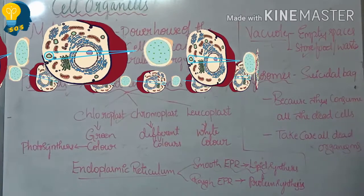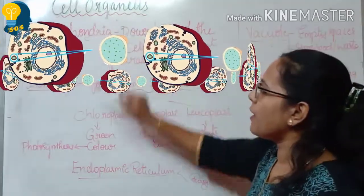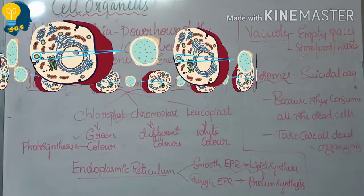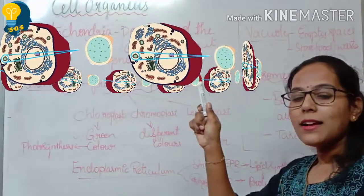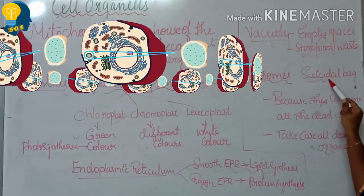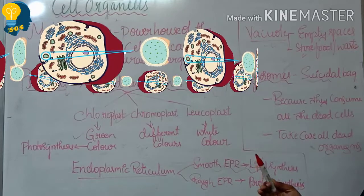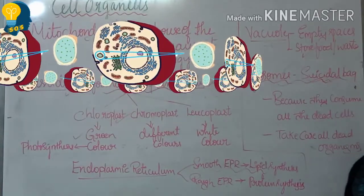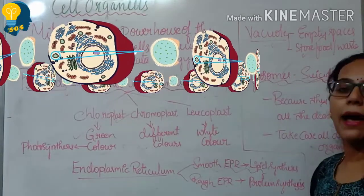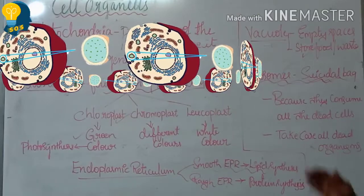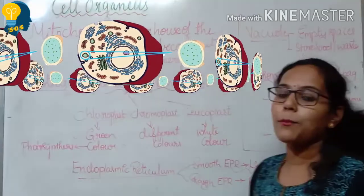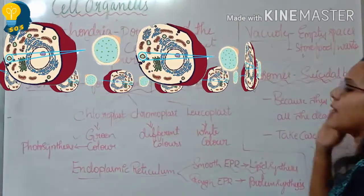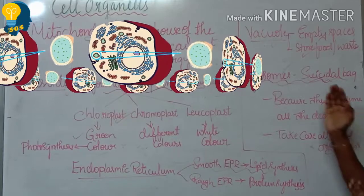Next, let us move towards the lysosome — which will definitely be asked in the exam. Lysosomes are cell organelles called the suicidal bags of the cell. They are called suicidal bags because they consume all the dead cells. For example, suppose you suddenly fall down — your cells get ruptured and damaged. Those damaged cells are consumed by the lysosomes. All dead cells are taken care of by the lysosomes.